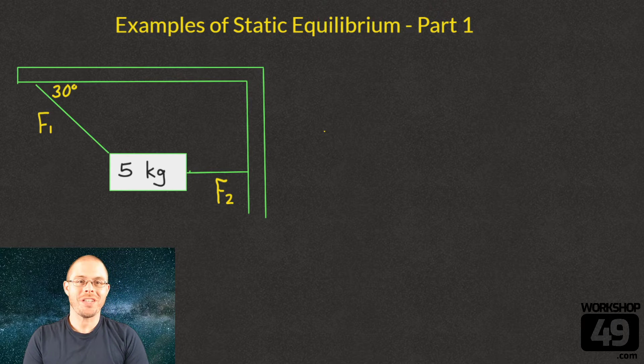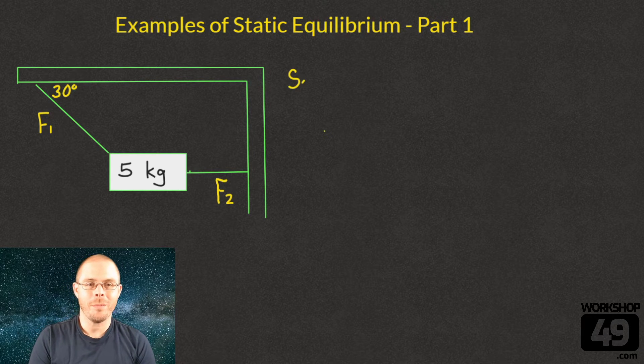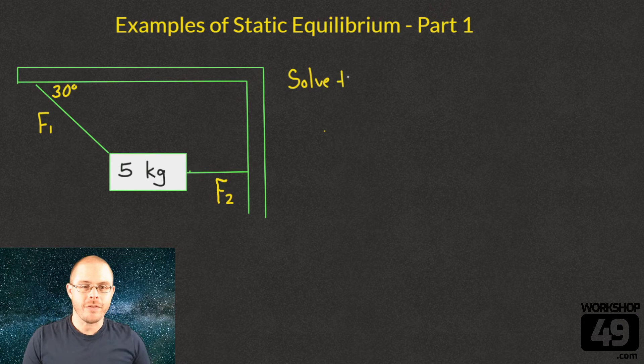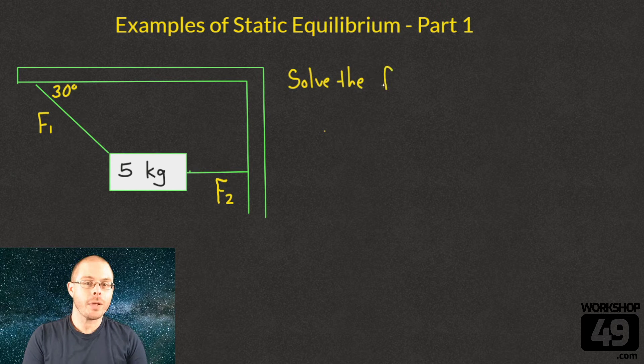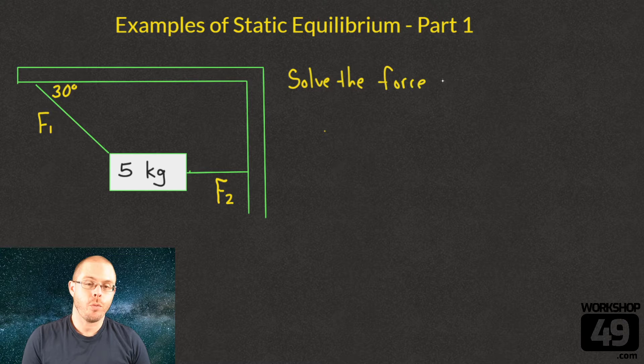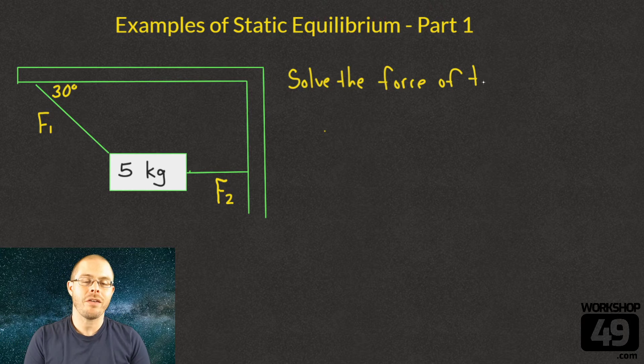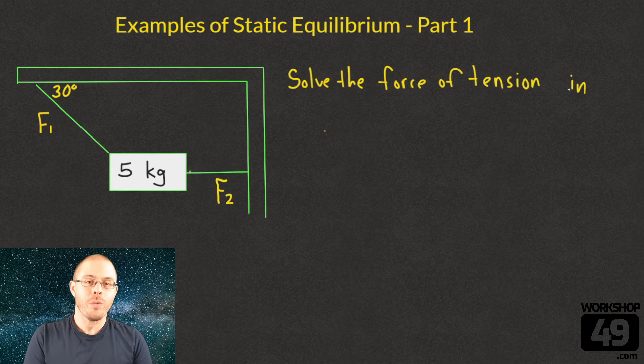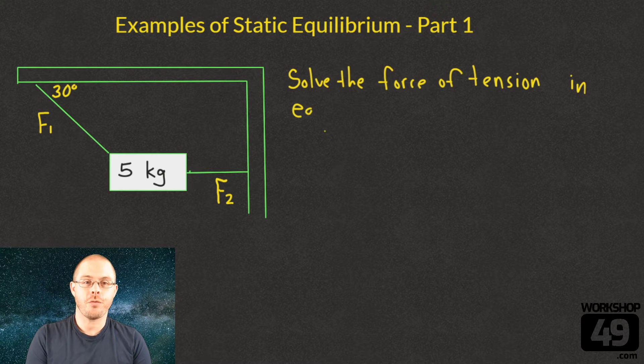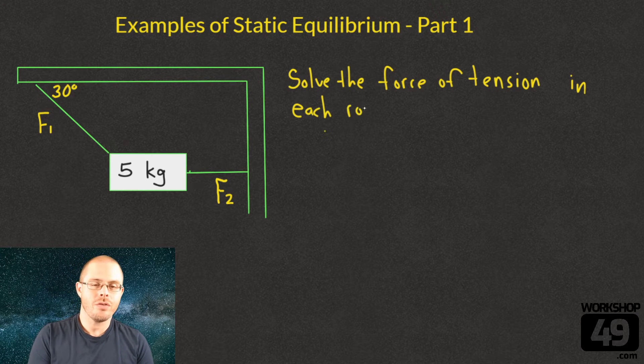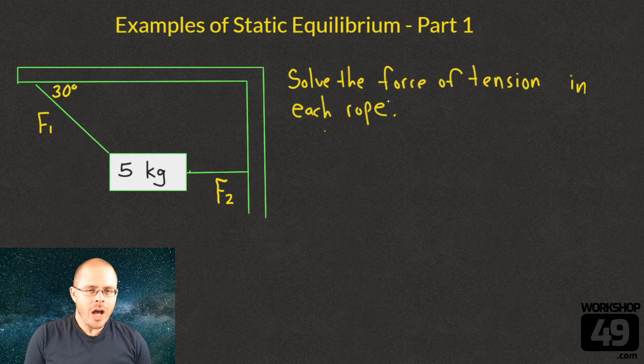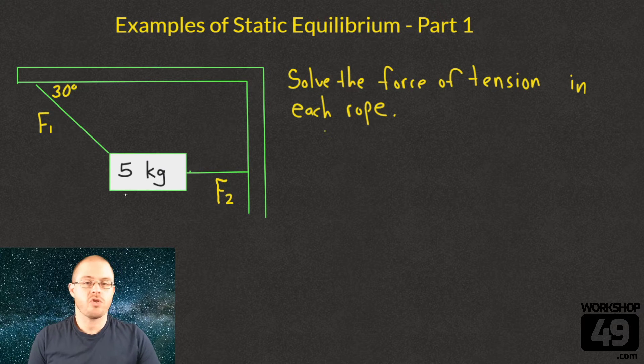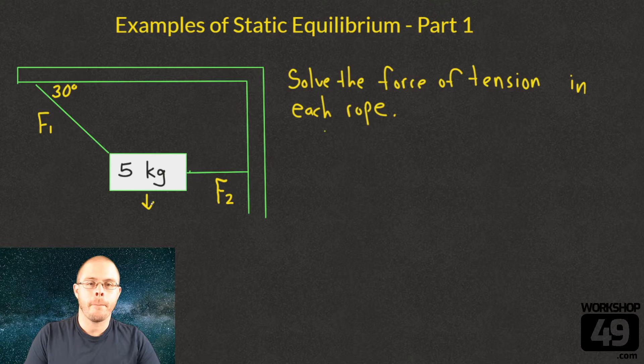Hey everyone, this is our first example of static equilibrium. In this problem we have a 5 kilogram block that's supported by two different ropes. We have an F1 that's going up and to the left, and we have an F2 that's straight out to the right. We've been tasked with finding the force of tension in each of these ropes so that this 5 kilogram block isn't swinging around or falling.